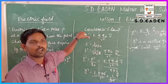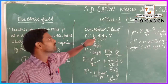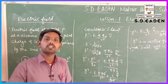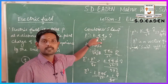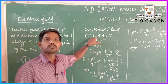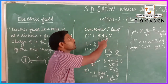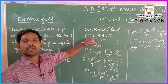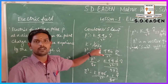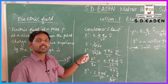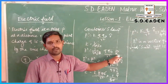The electric field is based on Coulomb's law. We already discussed that F vector = k·q1·q2 / r² · r̂. Here, using test charge q0 and source charge q, the equation becomes: F vector = k·q·q0 / r² · r̂. Substituting k = 1 / (4πε), we get F vector = (1 / 4πε) · q·q0 / r² · r̂.